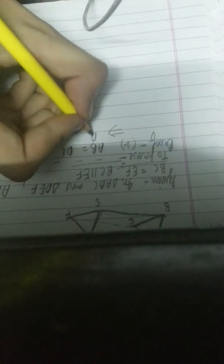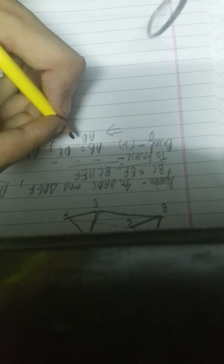This is very simple. We are already given that AB is equal to DE and AB is parallel to DE. So from here, we can directly say that ABED is a parallelogram because the conditions are satisfied.